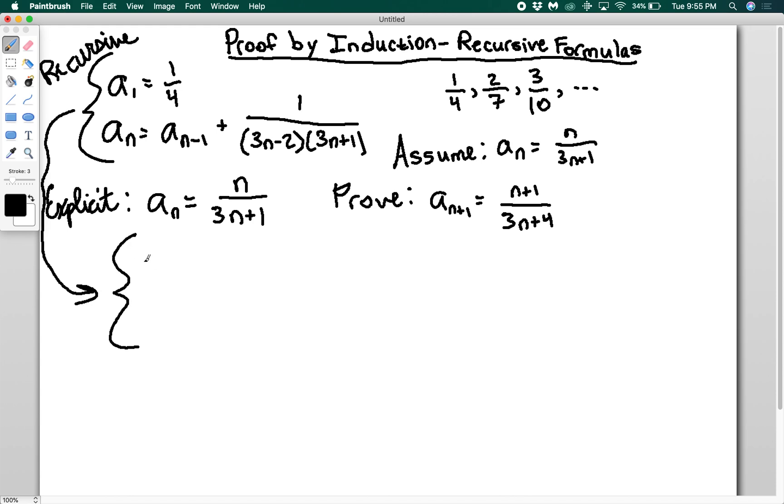I'm going to re-index it: a1 = 1/4 still, but I'm changing how I write it. It's going to be an+1 = an + 1/((3n+1)(3n+4)), where everywhere I'm adding 1 to n.